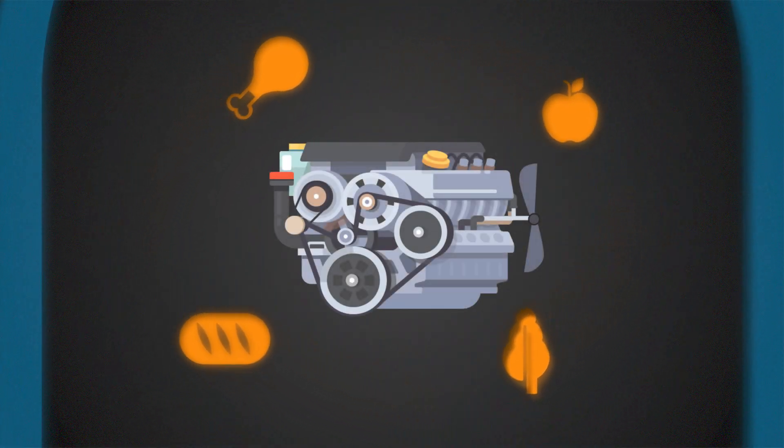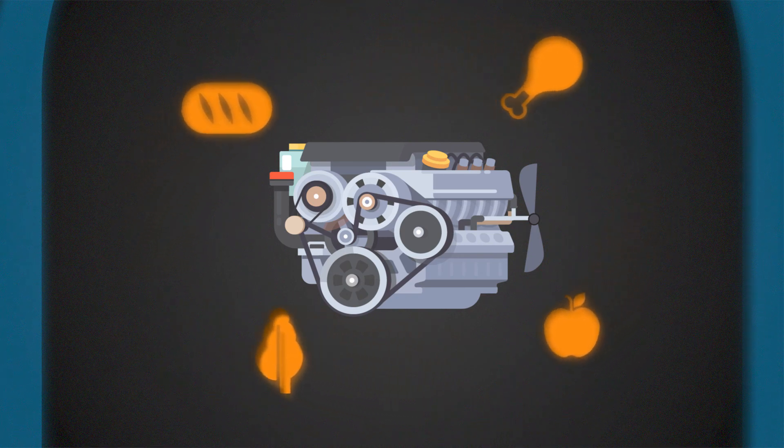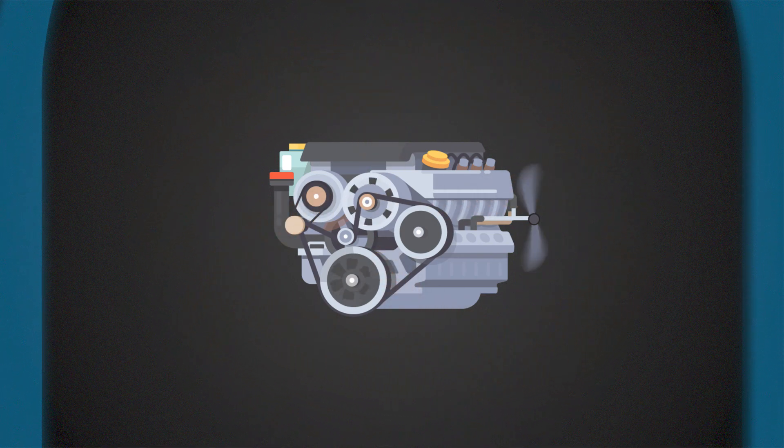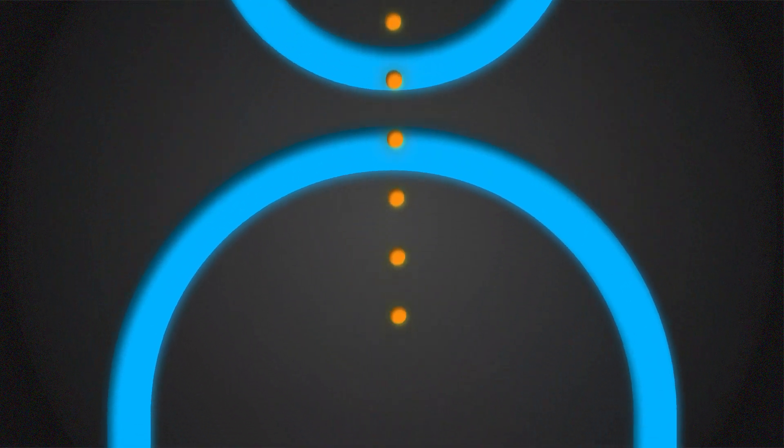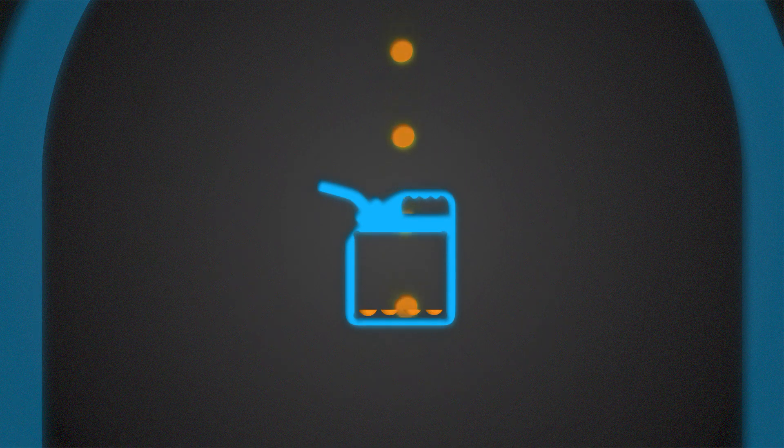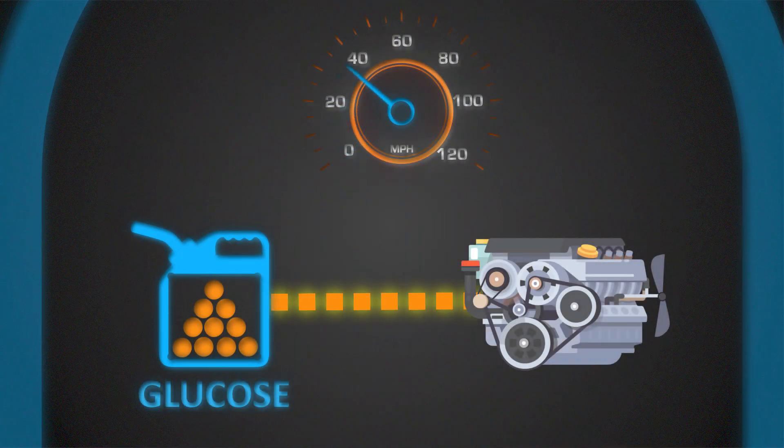Think of your body as an engine that burns different types of fuel for energy. After eating a meal, your body uses the glucose, or sugar, that is in the food you just ate.